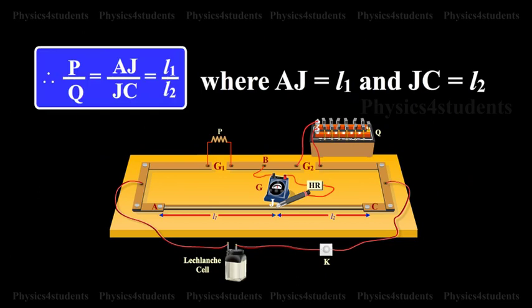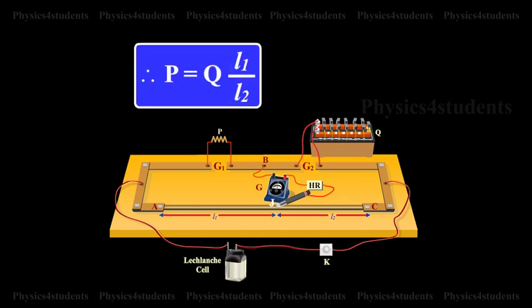Therefore, P/Q = AJ/JC = L1/L2, where AJ = L1 and JC = L2. Therefore, P = Q × L1/L2.